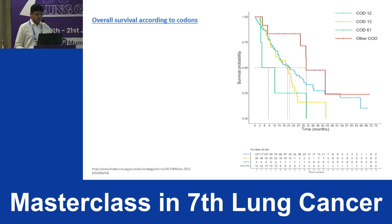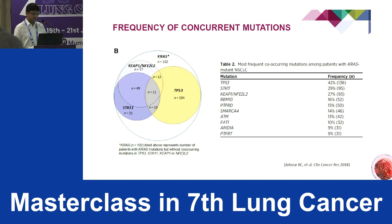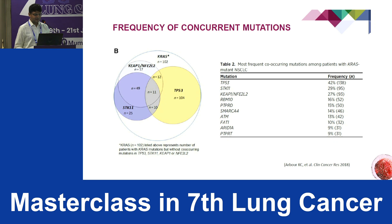It is important to note that all KRAS mutations are not the same — depending on the codon involved, the prognosis varies. Equally important is the very high prevalence of concurrent mutations: around 42 percent TP53, 29 percent STK11, and 27 percent KEAP1. Concomitant mutations are very important when evaluating a KRAS-mutated patient.